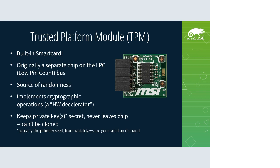A TPM is basically a built-in version of a smart card. Originally it was a separate chip on the mainboard connected to the low pin count bus, with various features related to security and cryptography. It has a hardware random number generator and implements several cryptographic operations. I refer to it as a hardware decelerator — while you can tell it to AES encrypt, decrypt, or do hashes, it's just really slow, being a chip without any performance, but definitely meant to perform those algorithms securely.